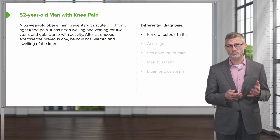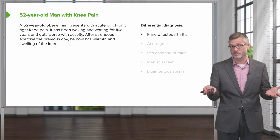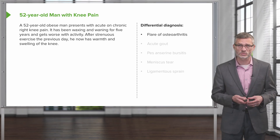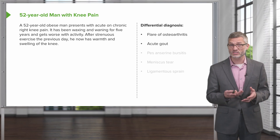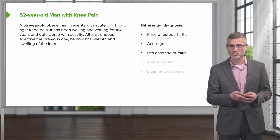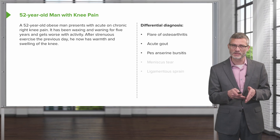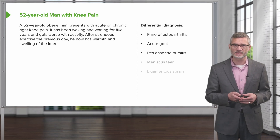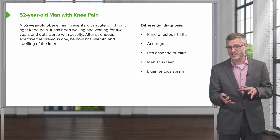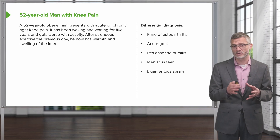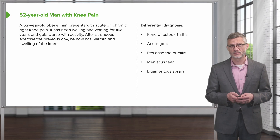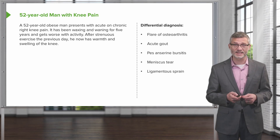In summary, for this particular patient, we're thinking this could just be a flare of osteoarthritis, which can manifest with a small effusion, or is this acute gout? He's in the right age group for that. Pesanserine bursitis, just on the medial distal aspect of the knee. Does he have an acute meniscal tear, or has he potentially strained one of his ligaments while doing that strenuous exercise yesterday? Let's move on with our physical exam.